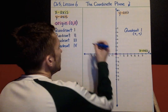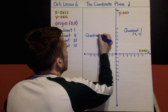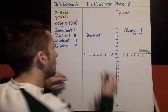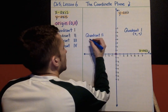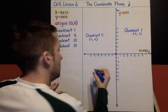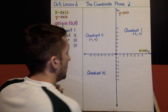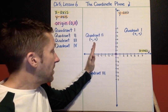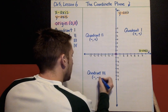Quadrant two is this quadrant — all the points over here. These are given by a negative x-coordinate and a positive y-coordinate: negative, then positive. Quadrant three is this quadrant right here. If I start at the origin to get to quadrant three, I'm going to need a negative x-coordinate and then a negative y-coordinate — negative, negative.